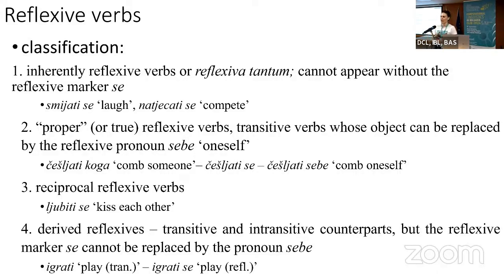Regarding reflexive verbs and their classification in Croatian, there are several classifications and this is the most accepted one. We have inherently reflexive verbs, or reflexiva tantum — they cannot appear without the reflexive marker 'se', for example 'smijati se', 'natjecati se'. Then so-called proper or true reflexive verbs: transitive verbs whose object can be replaced by the reflexive pronoun 'sebe', for example 'češljati koga' and 'češljati sebe'. But they are a bit problematic, as we will see.